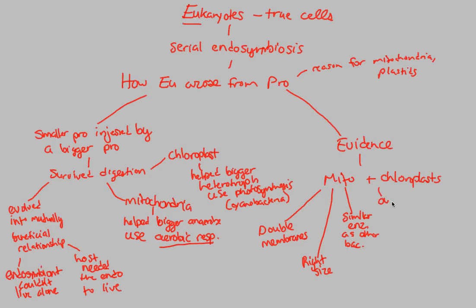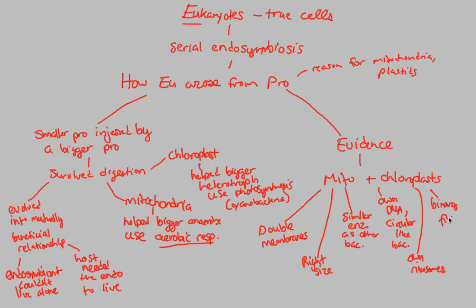Both mitochondria and chloroplasts have their own DNA — if that doesn't tell you they once lived alone, nothing will. More importantly, their DNA is circular, just like bacteria. We have double helical DNA, but they have circular DNA, just like bacteria. They also have their own ribosomes, independent of our cell's ribosomes. And both mitochondria and chloroplasts undergo binary fission — the same way bacteria replicate.